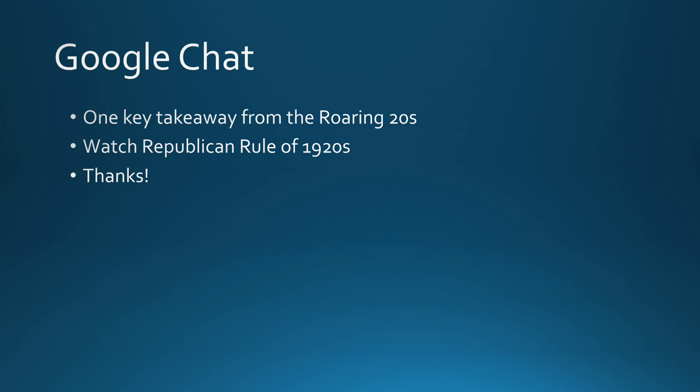At this point, to take a little break but continue the interactive element, give me one key takeaway from the Roaring Twenties from today's lesson — something you think is important. It's vague on purpose. Then you can move on to the next video, which is Republican Rule of the 1920s. There are more instructions at the end of that video. As always, thanks — any questions you can post in the chat, email me, or use Google Classroom.